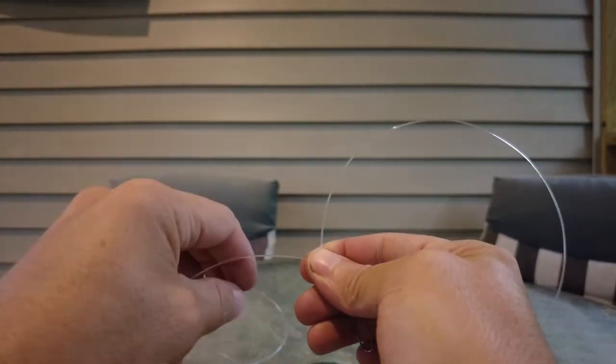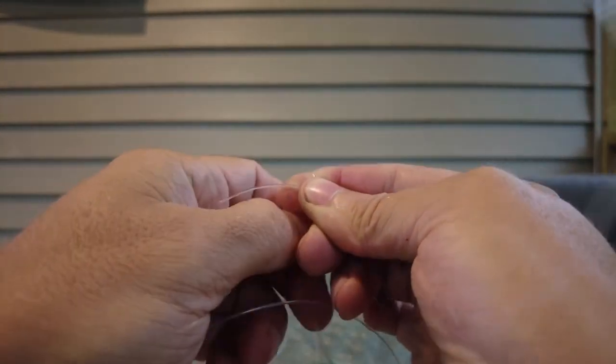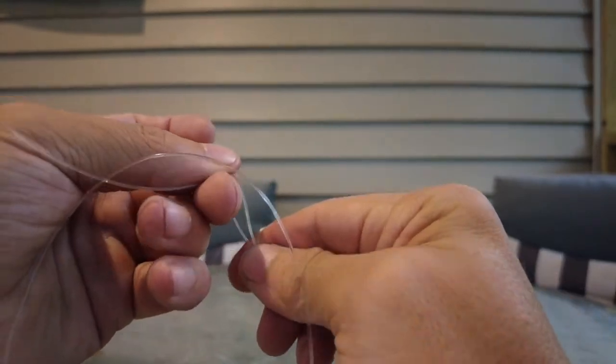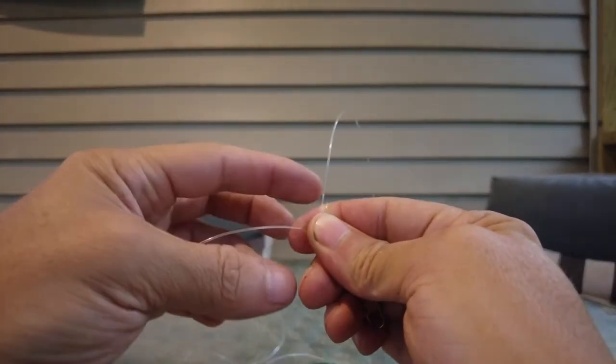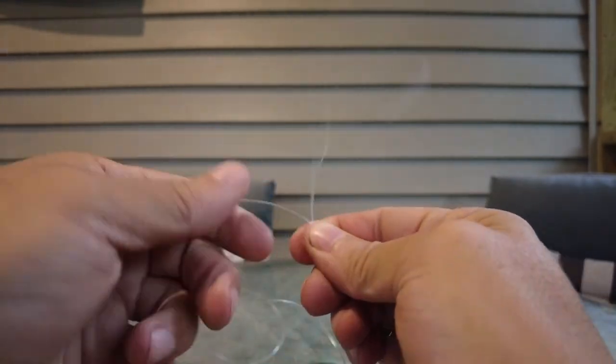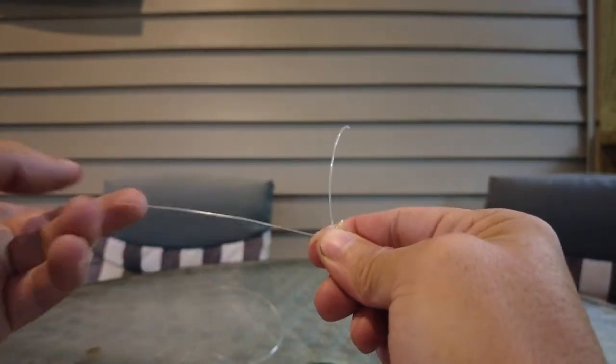Now, while keeping it pinched, we're going to take our tag and we're going to wrap it around our finger and the main line. We're going to do it three times. There's one full wrap, two full wraps, three full wraps.